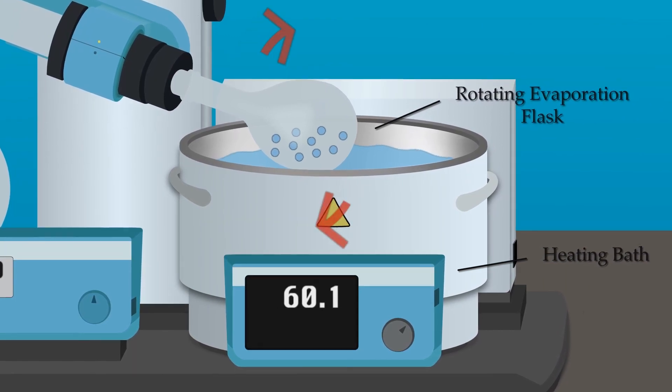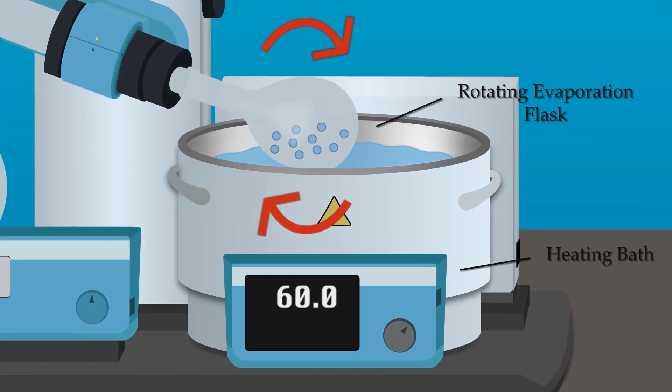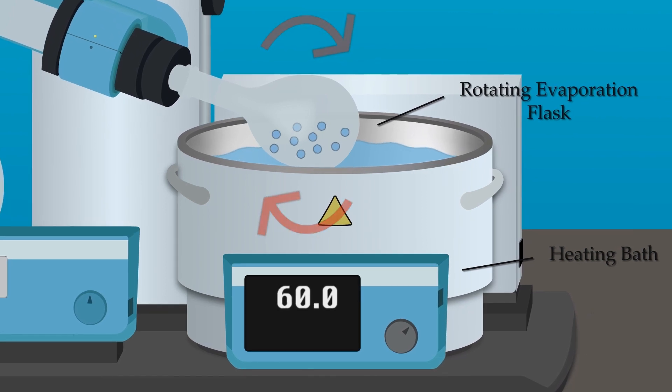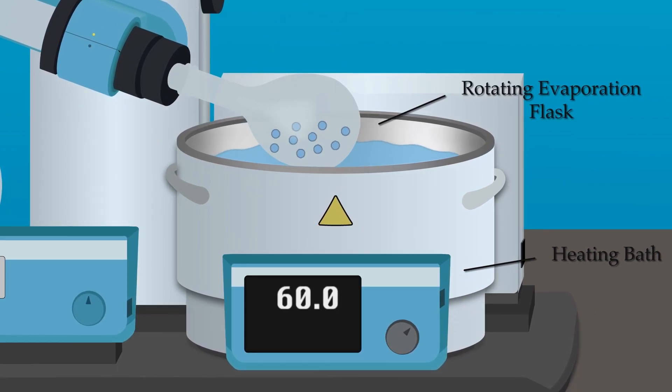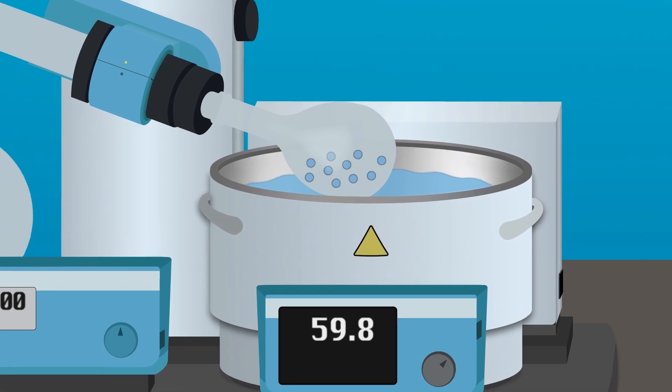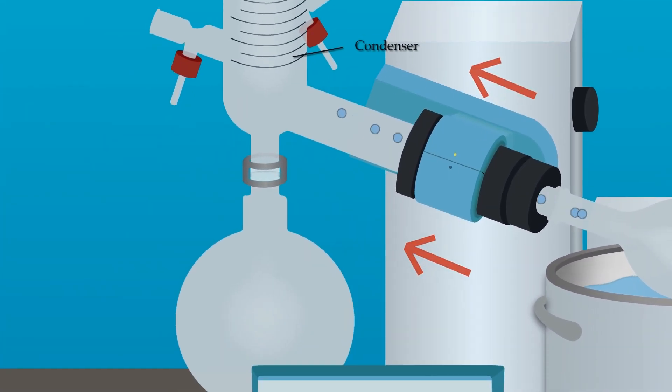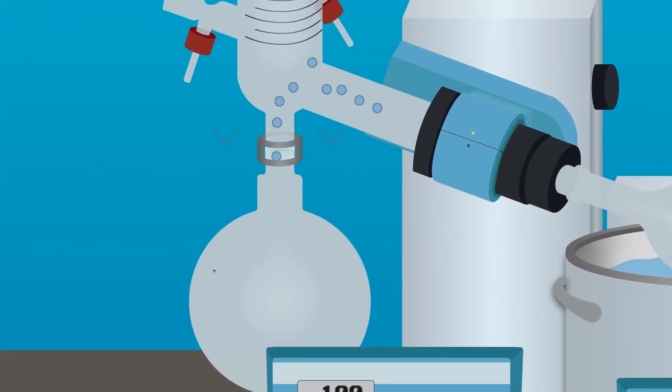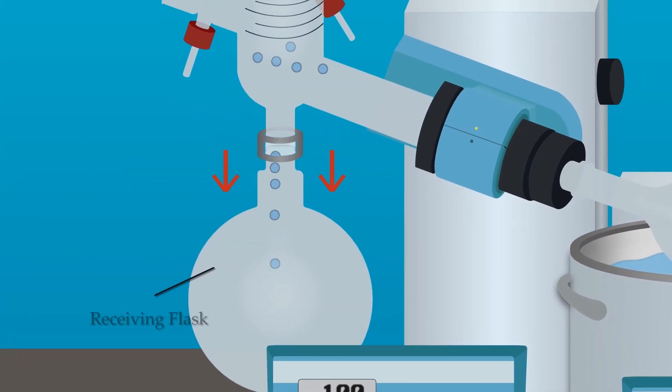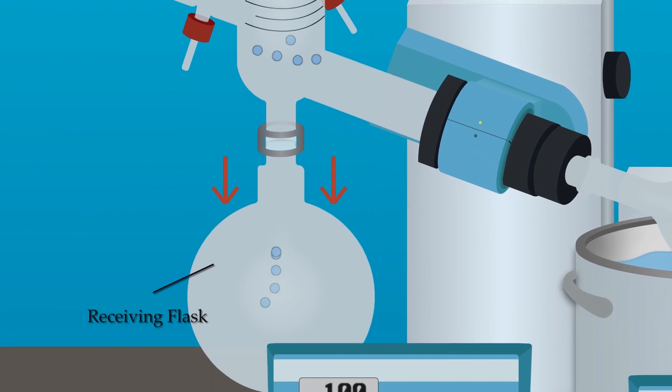The flask will also rotate while in the water bath, increasing the surface area of the solvent and allowing more solvent molecules to escape. The vaporized solvent molecules will travel up towards a chilled condenser where they'll begin to condense and drip down into a receiving flask. This is where all the excess solvent will collect, leaving behind a concentrated sample in the rotating flask.